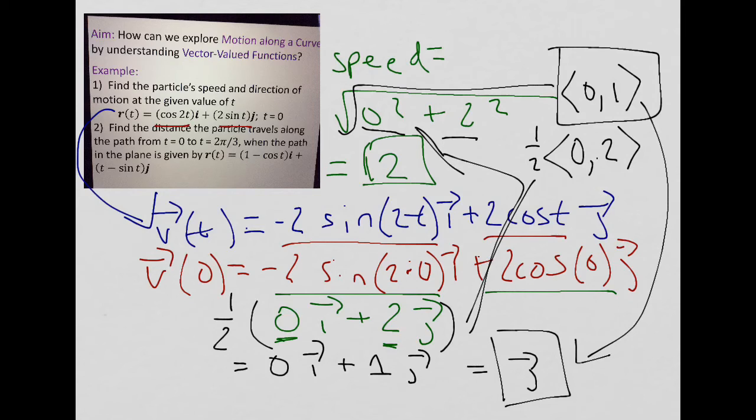Let's take a look at the distance the particle travels along the path from t equals 0 to t equals 2 pi over 3 when the path in the plane is given by our vector-valued function there, number 2. I gave you some time to maybe jot it down. The distance the particle travels, and remember I went through distance with you.